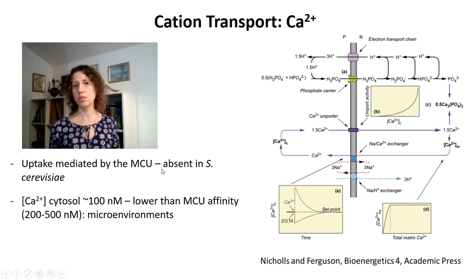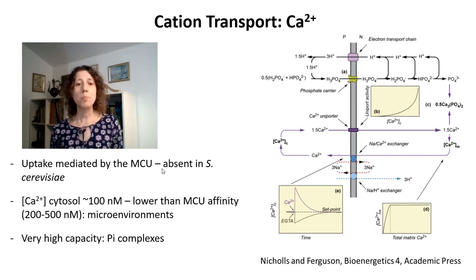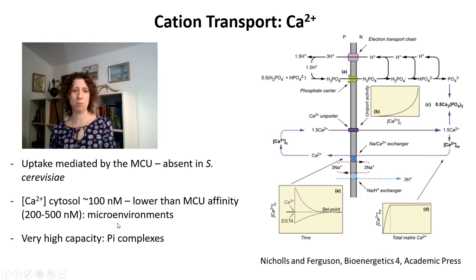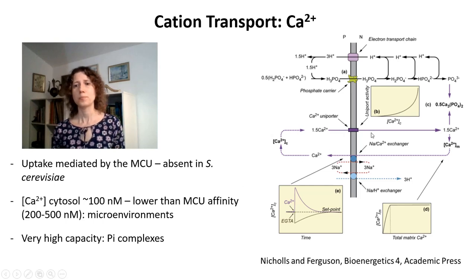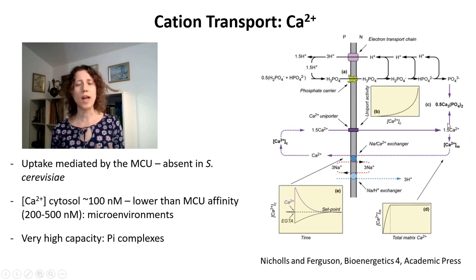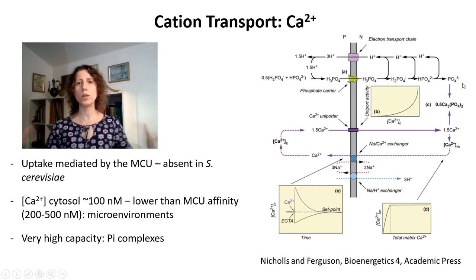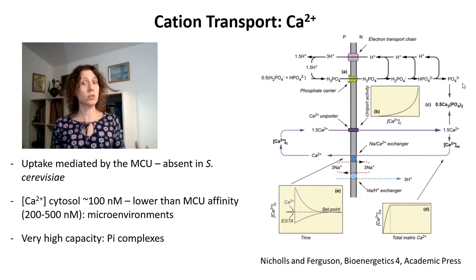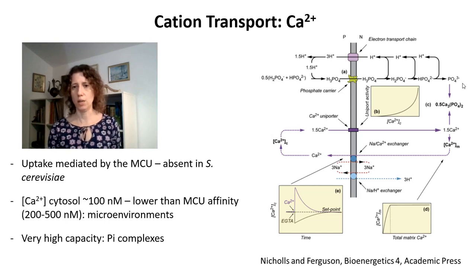Now, if the affinity for calcium of the mitochondrial calcium uniporter is relatively low compared to the ER, the capacity of mitochondrial calcium uptake is very, very high. Mitochondria can take up large quantities of calcium in their matrix. You can actually have the formation of calcium phosphate precipitates in the matrix once calcium concentrations reach a saturation level within the matrix. So the amount of calcium that mitochondria can take up is much, much larger than the amount of calcium that the ER can take up — low affinity, high capacity calcium uptake.